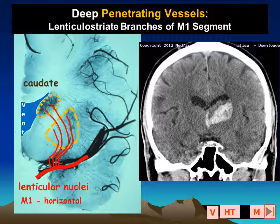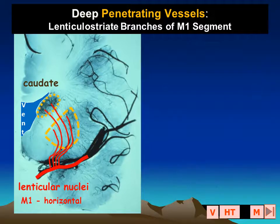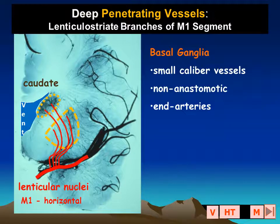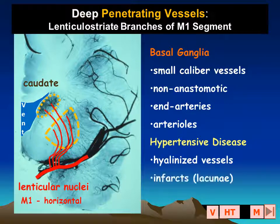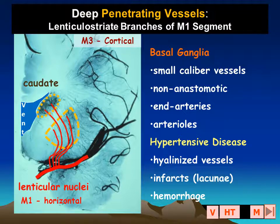When one of these vessels becomes occluded, we get a small lacunar infarction. When one of these vessels ruptures, we typically get a small self-limited hematoma in the same location. The basal ganglia and deep parts of the brain are supplied by these small caliber non-anastomotic end arteries and arterioles that are uniquely sensitive to long-standing hypertensive disease. They become hyalinized, they may rupture, or they may become occluded.